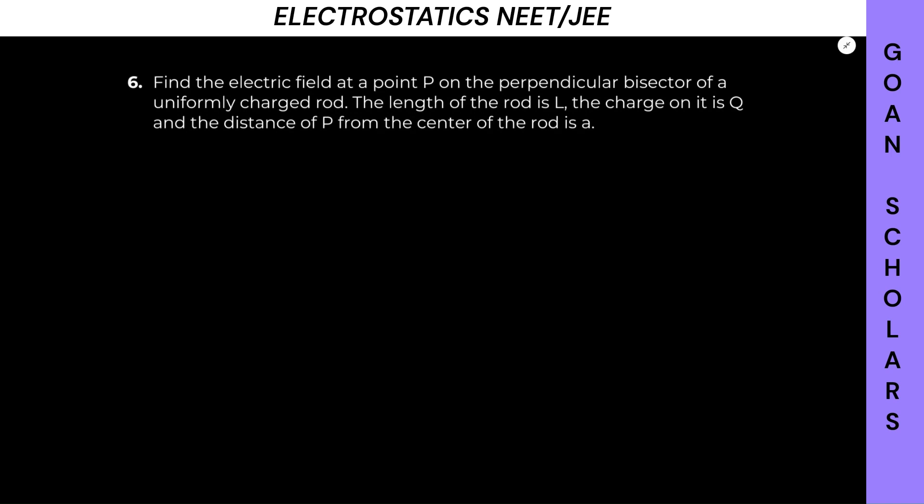Find the electric field at any point P on the perpendicular bisector of a uniformly charged rod. The length of the rod is L, the charge on it is Q, and the distance of P from the center of the rod is A.